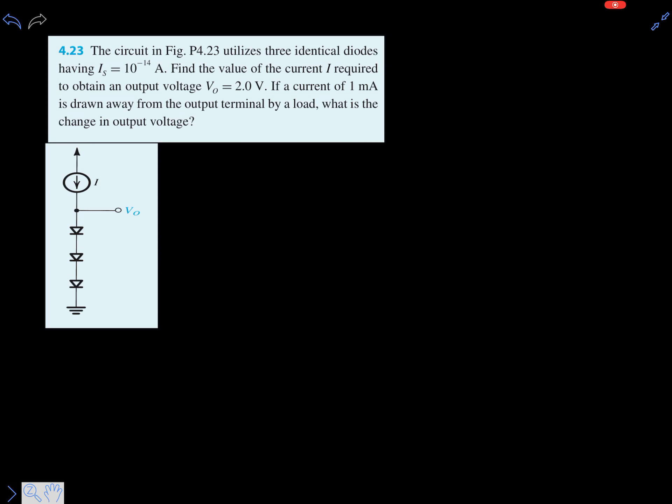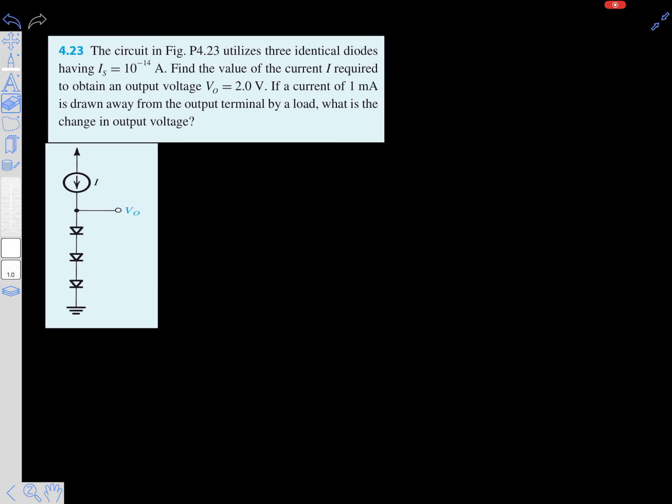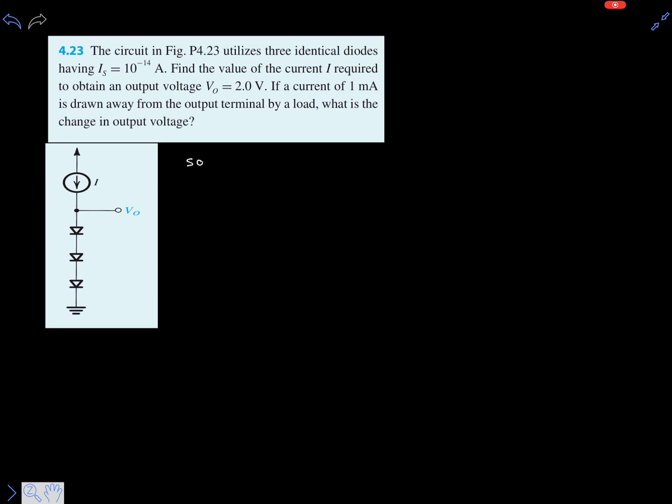Let's solve one more problem on diode circuits. The problem is asking for the change in output voltage if the output draws some current of 1 milliampere. The output is intended to be at 2 volts, but because the output is drawing 1 milliampere, we need to find the change in output voltage.